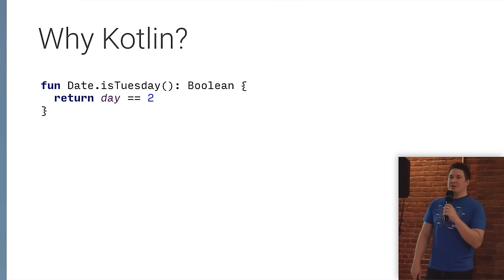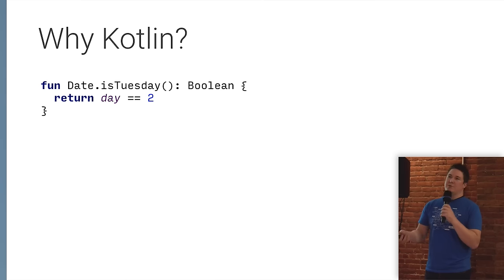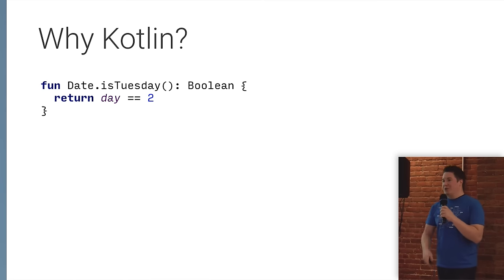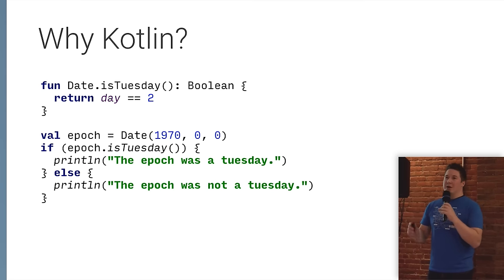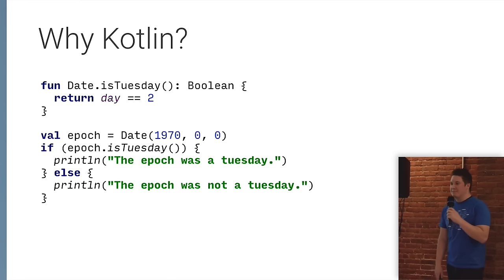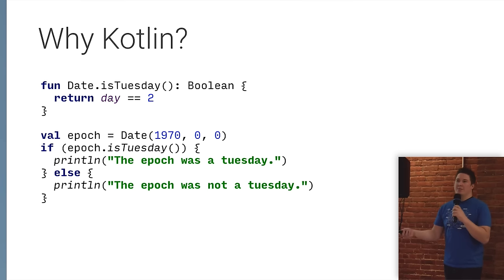There's also extension methods. This is something sorely missed in Java, which is why you see a lot of so-called utility classes. Kotlin can actually add methods like the super useful isTuesday method to the Date type, and we can call it as if it were a method already on Date itself. It behaves like any other method, and it winds up being a static method in the bytecode, so it's actually very fast to invoke.